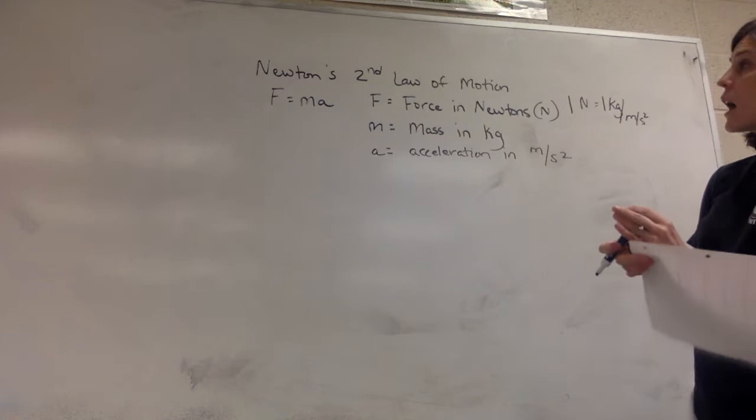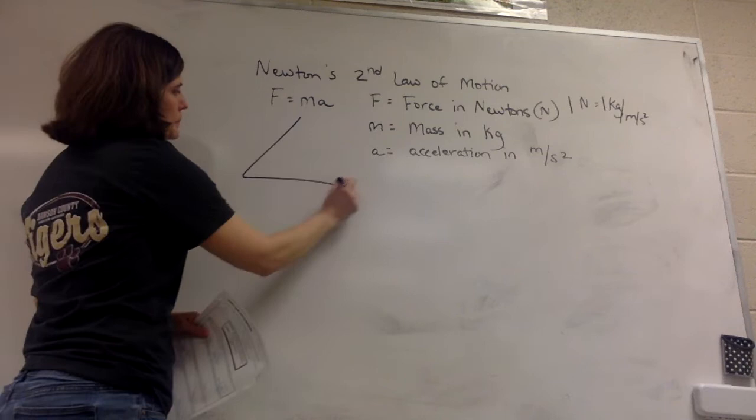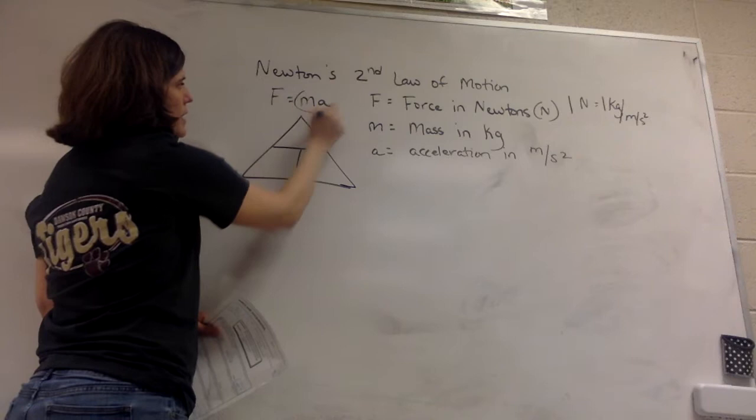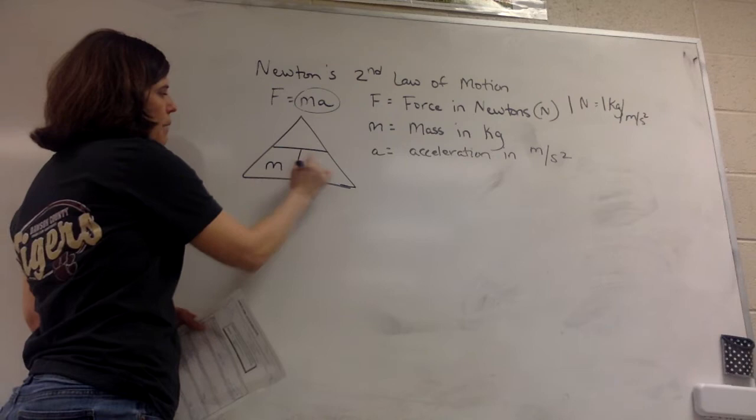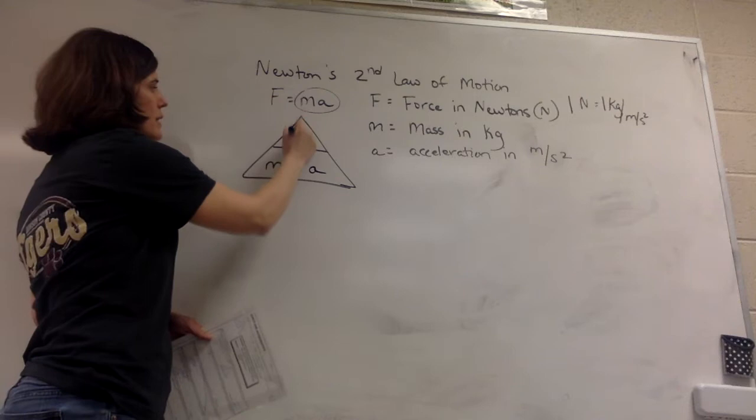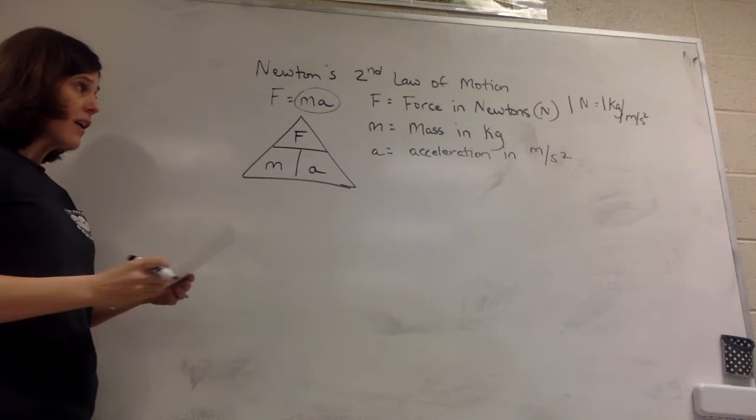Alright, so let's look at the triangle. Remember, if you prefer the triangle method with this equation, I'm going to look at the right side of the equal sign. In this case, the m and a are side by side together, so that means in the triangle they must also be side by side, which means they have to go in the bottom two spots in the triangle. That means the only spot left for the F for force is in the top. Okay, so this is what the triangle looks like for this equation.